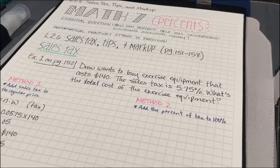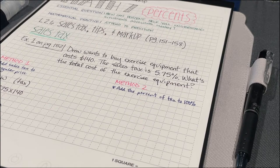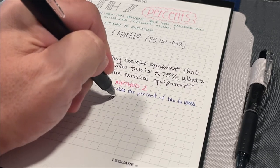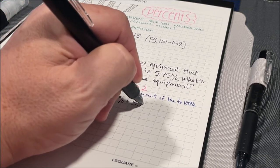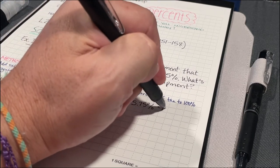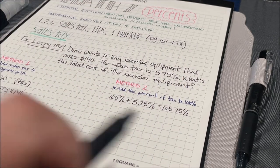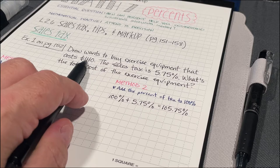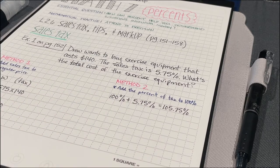The second method is for me to add the percent of the tax to 100. So I can start out with 100% plus 5.75%. And that's going to give me a total of 105.75%. That number right there represents 100% of the cost of the exercise equipment, which is $140, plus the 5.75% of the tax.